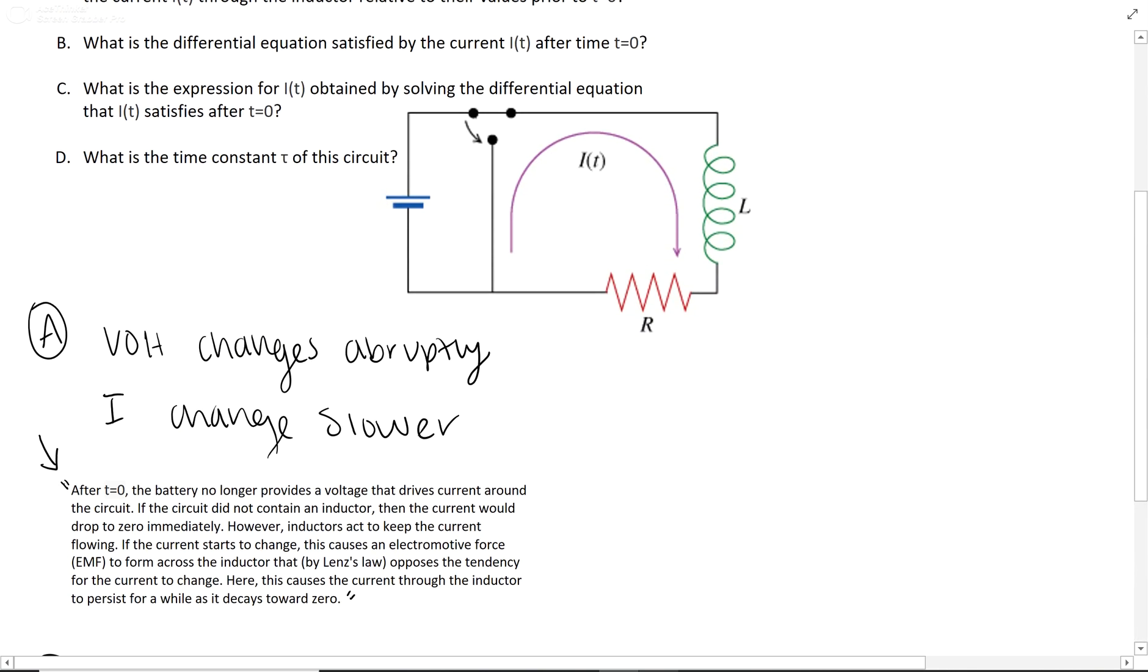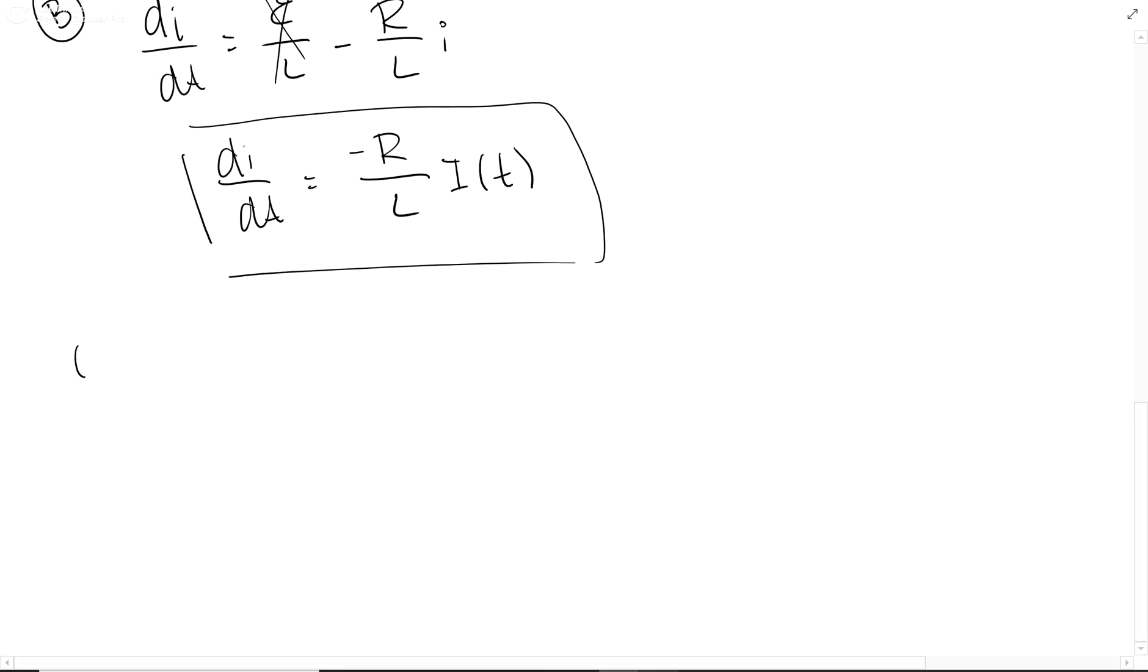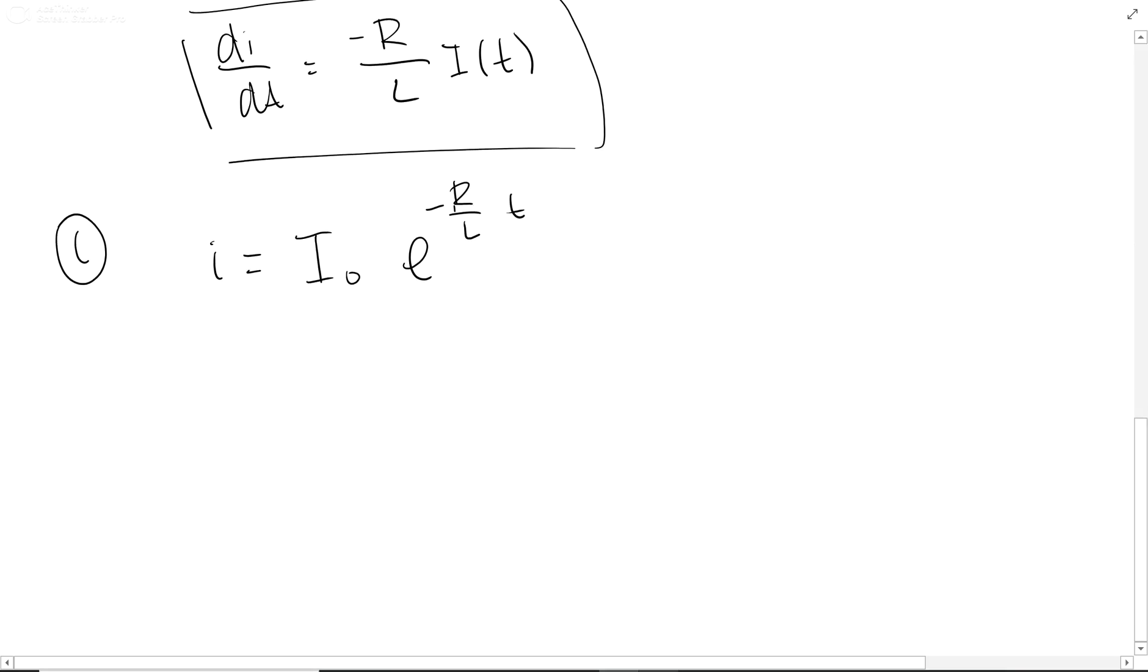For C, it's the expression for the actual i(t), not the rate of change. This is once again another equation that you're just going to find directly in your textbook. You kind of just go ahead and read that is the current decay in an RL circuit. But this is your answer for C, once again just straight from the textbook.